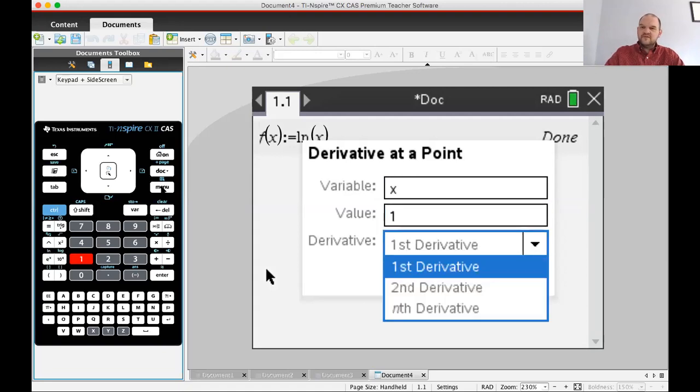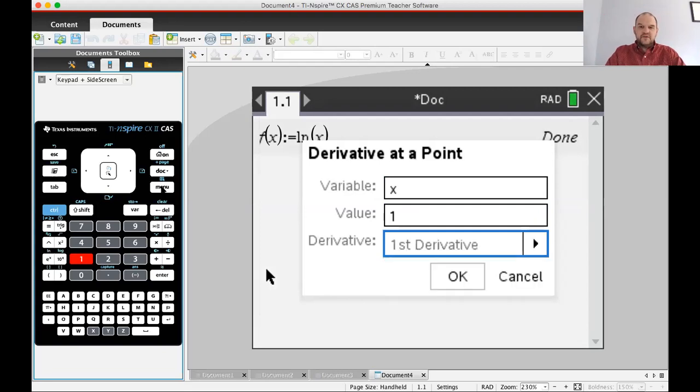Look at this: what derivative do I want? Do I want the first derivative, the second derivative, an nth derivative? An nth derivative is just like some generic derivative, like the 25th derivative, the 37th derivative, who knows. I do want the first derivative because I don't really know anything about any of the other derivatives yet.